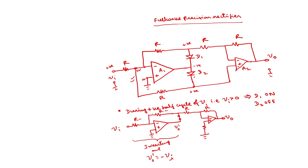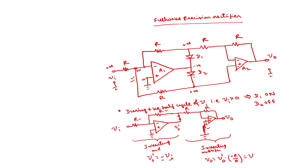Coming to the second stage circuit, this is also another inverting amplifier. The resistor at the non-inverting terminal can be neglected as no current flows through it — in practice it is used for compensating offset voltages and currents. Neglecting it, the output V_0 equals V_0 dash times gain minus R by R. Since V_0 dash is minus V_i, and there is another minus sign, minus of minus becomes plus. Therefore V_0 is equal to V_i during the positive half cycle.